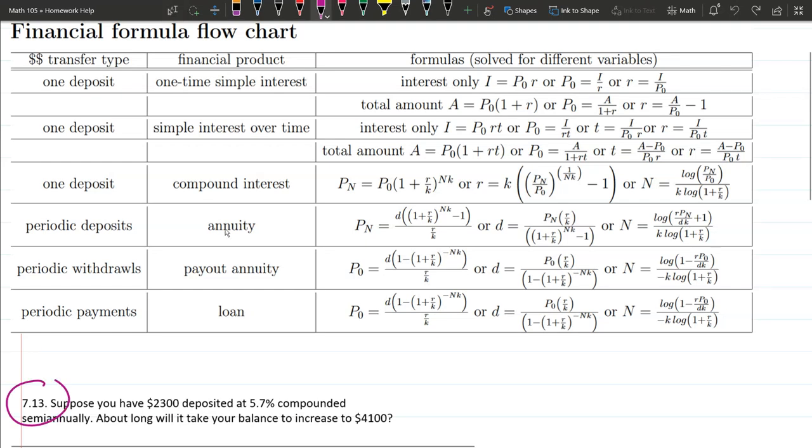So we're going to do problem 713. Suppose we have $2,300 deposited at 5.7% compounded semi-annually. How long will it take for your balance to increase to this amount? So we have a few of these we want to account for.